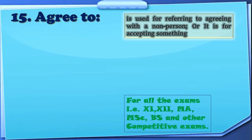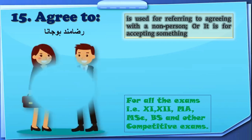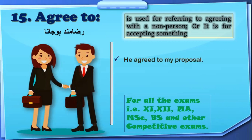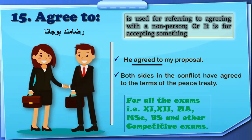When we agree on a matter or something together, how we are going to use it in sentences: 'He agreed to my proposal.' So we have used here 'Agreed To.' Another example: 'Both sides in the conflict have agreed to the terms of the Peace Treaty.' So we have used 'Agreed To' once again.